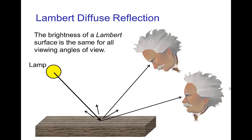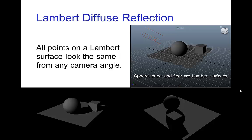The simplest type of diffuse reflection is called Lambert reflection. For a surface that has Lambert diffuse reflection, the brightness of that surface looks the same from all viewing angles. So if you focus on a spot on this Lambert surface and you move your head or the camera, you'll still see the same brightness. Here in computer graphics, we have various objects that are Lambert diffuse surfaces with a directional light. As we rotate the view, the brightness of the floor doesn't change, and a spot on the top of the cube remains the same brightness.